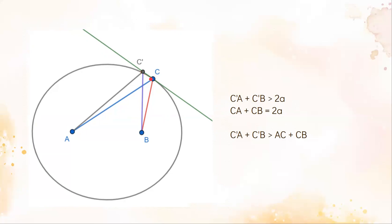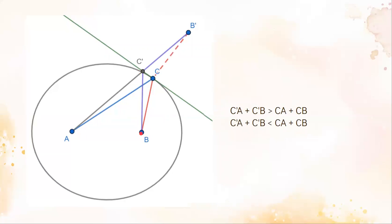This means that C'A plus C'B must be greater than 2a. We also know that CA plus CB equals 2a because C is on the edge of the ellipse. And so, C'A plus C'B is greater than CA plus CB. However, remember that before we proved that it is actually less?